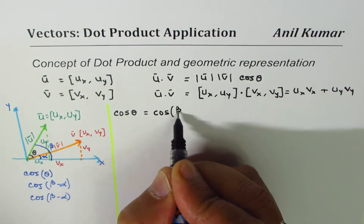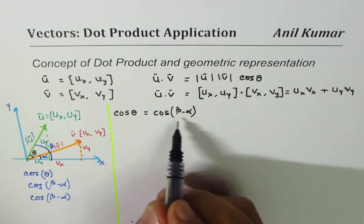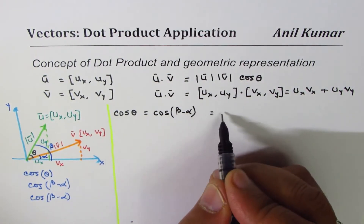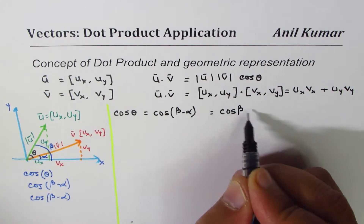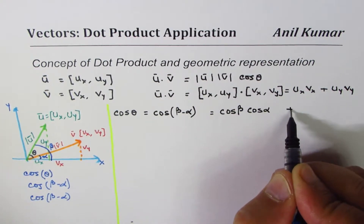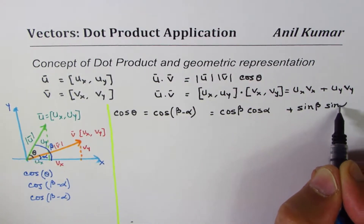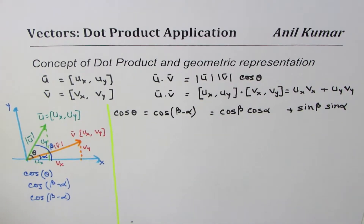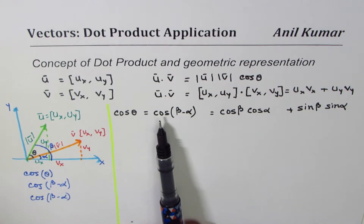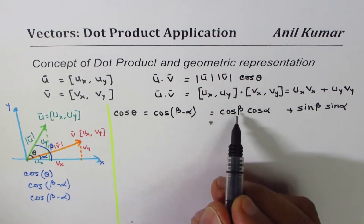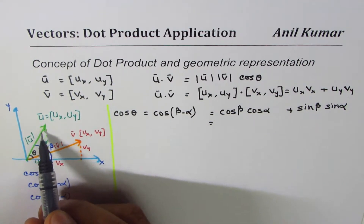Clearly cos theta equals cos(beta minus alpha). Using the compound angle trigonometric formula: cos(beta minus alpha) equals cos beta cos alpha plus sin beta sin alpha. This is the well-known compound angle formula which we are going to use to expand cos(beta minus alpha).